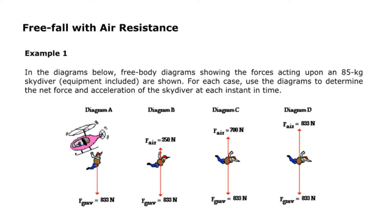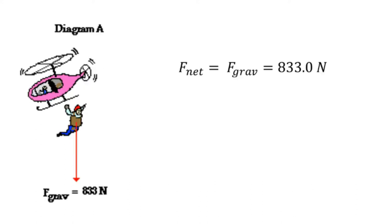In the diagrams below, free body diagrams showing the forces acting upon an 85-kilogram skydiver — equipment included — are shown. For each case, use the diagrams to determine the net force and acceleration of the skydiver at each instant in time. For diagram A, we know that the net force is just the same as our force of gravity.